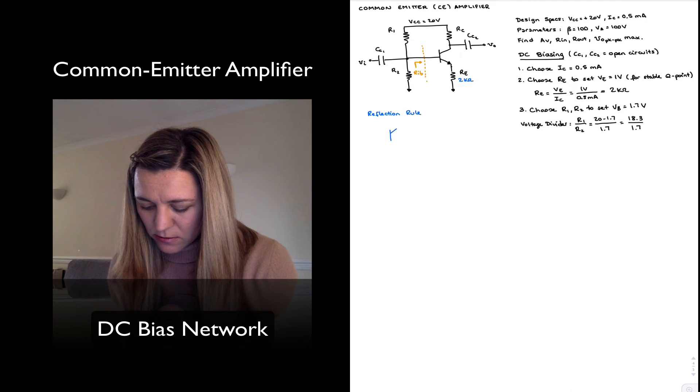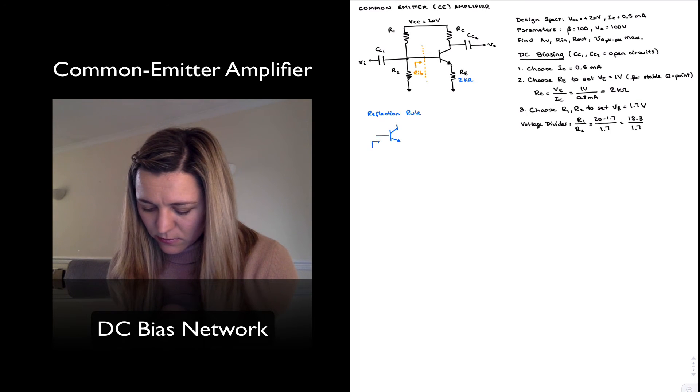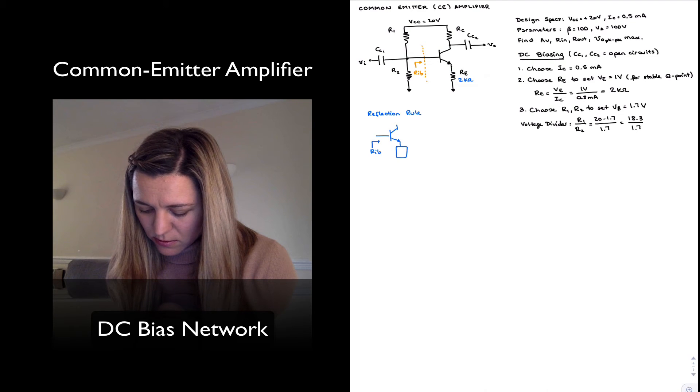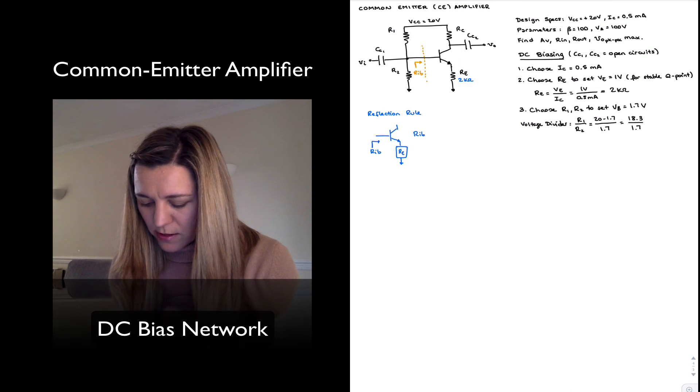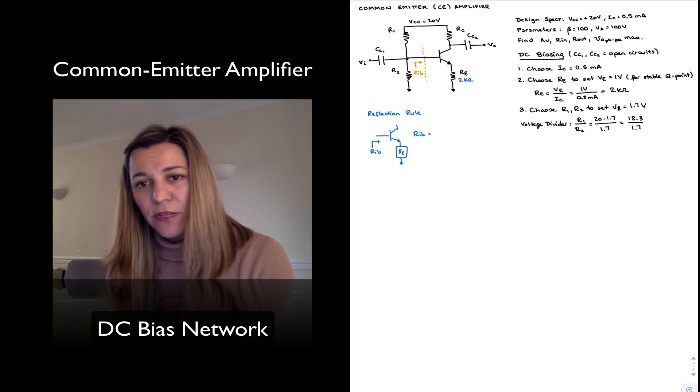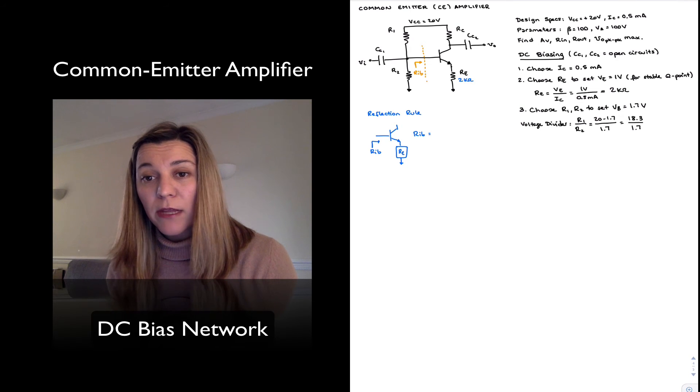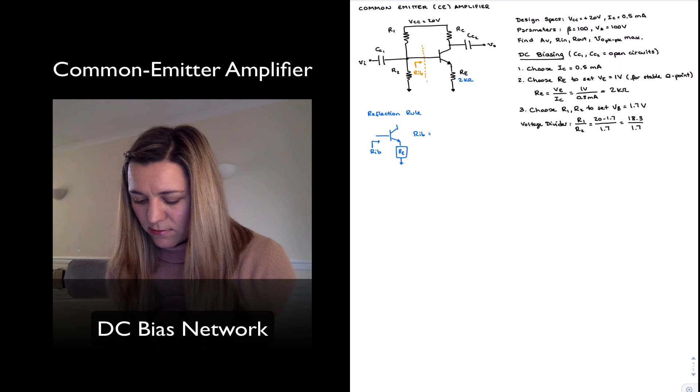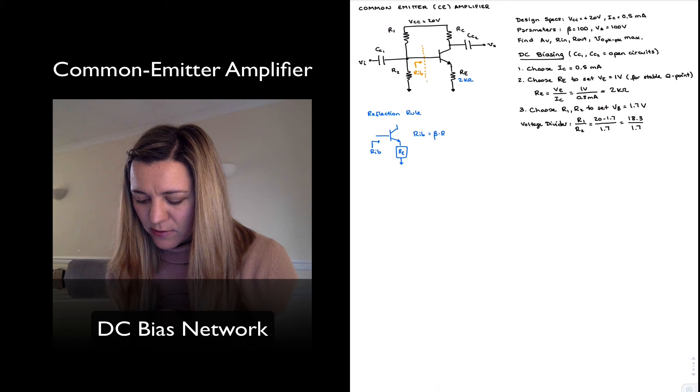The reflection rule tells us that the resistance looking into the base of a transistor, RIB, is equal to the resistance connected to the emitter of the transistor multiplied times a factor of beta. So in this case, beta times RE.